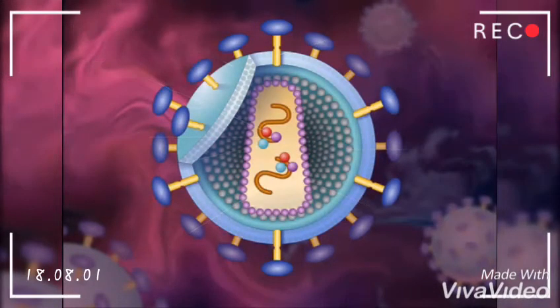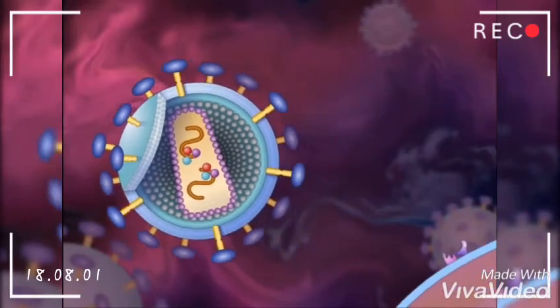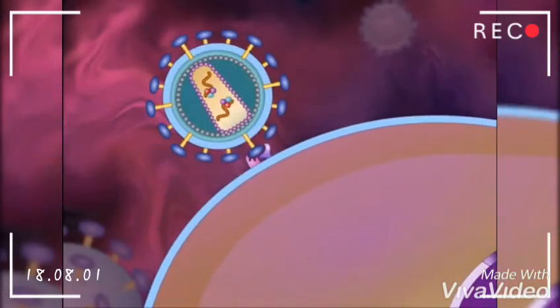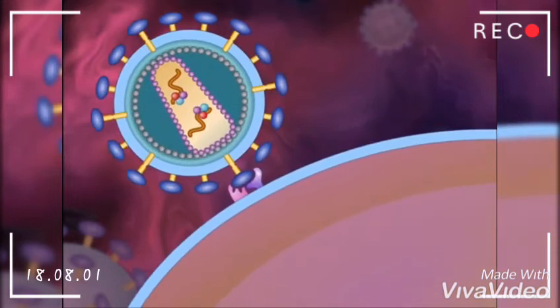To establish infection, HIV must first attach to its host cell. Attachment occurs by interaction between gp120 on the surface of the virus and the CD4 antigen receptor on the surface of the host cell.